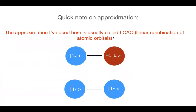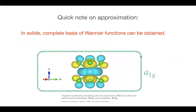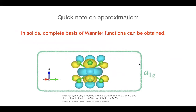A note on this approximation: I used LCAO — linear combination of atomic orbitals. When atoms are very close, LCAO breaks down, which is why we normally use Wannier functions. Wannier functions fully characterize the bands of interest with a complete basis set. Here I show an example of an anti-bonding Wannier orbital in titanium dichloride (TiCl₂): you can see titanium d character and p orbitals on chloride, with the phase alternating plus/minus — an anti-bonding orbital.